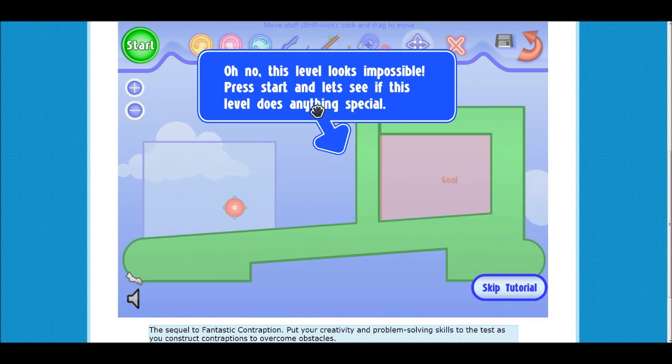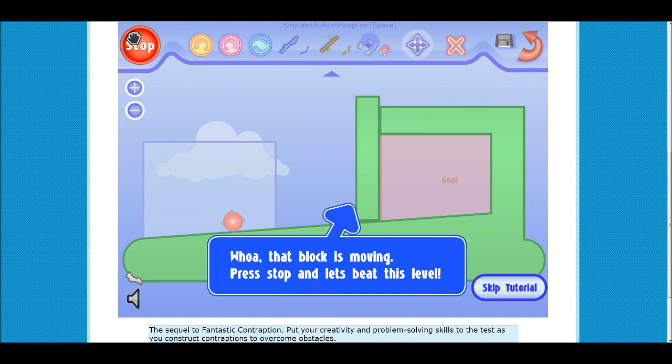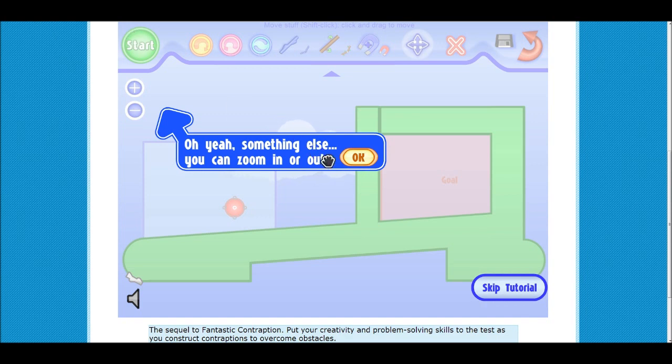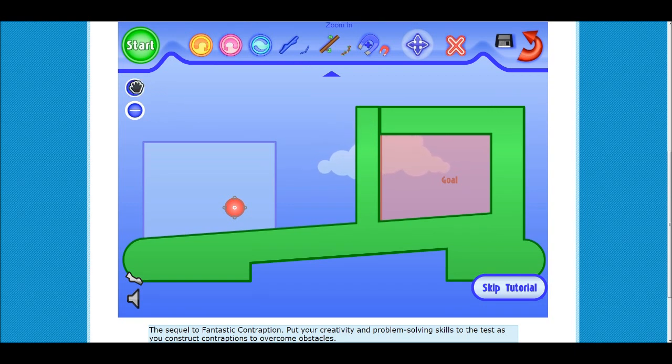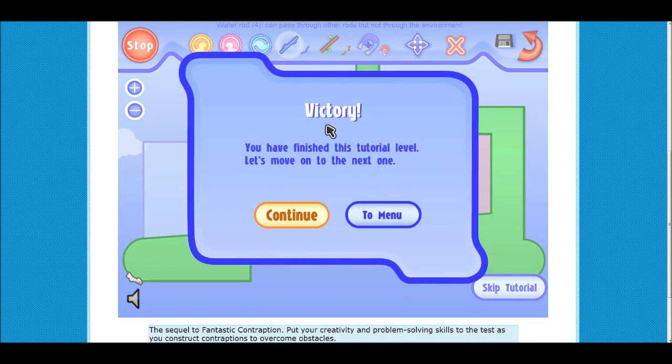This level looks impossible. Let's see if this level does anything special. So there's special things that happen. That thing moves up. You can zoom in or out. Zoom in, zoom out. That didn't work at all. So I'm going to take this one. Water rod tool. It seems like the same old thing again. That's the same old thing, still part of the tutorial.